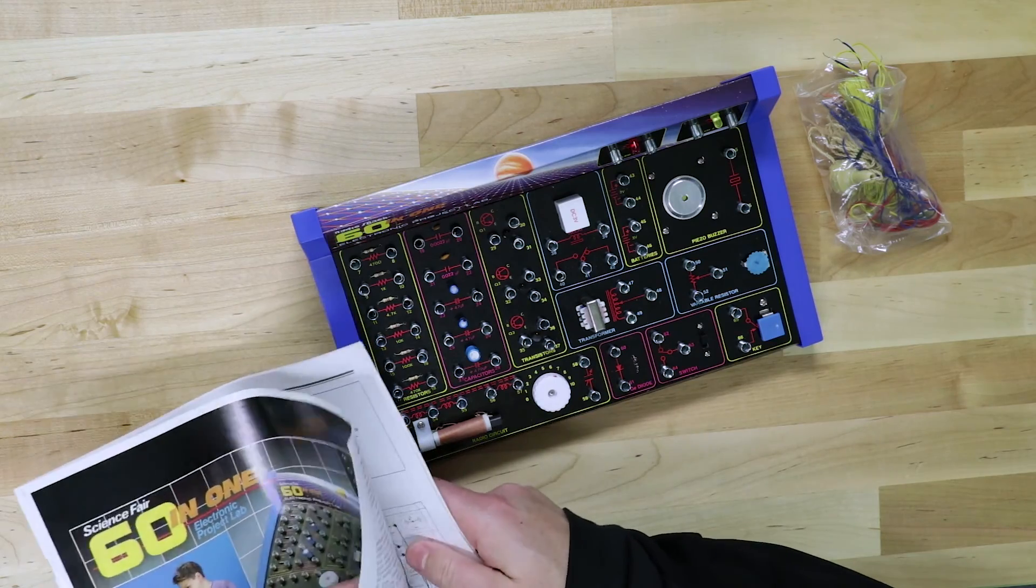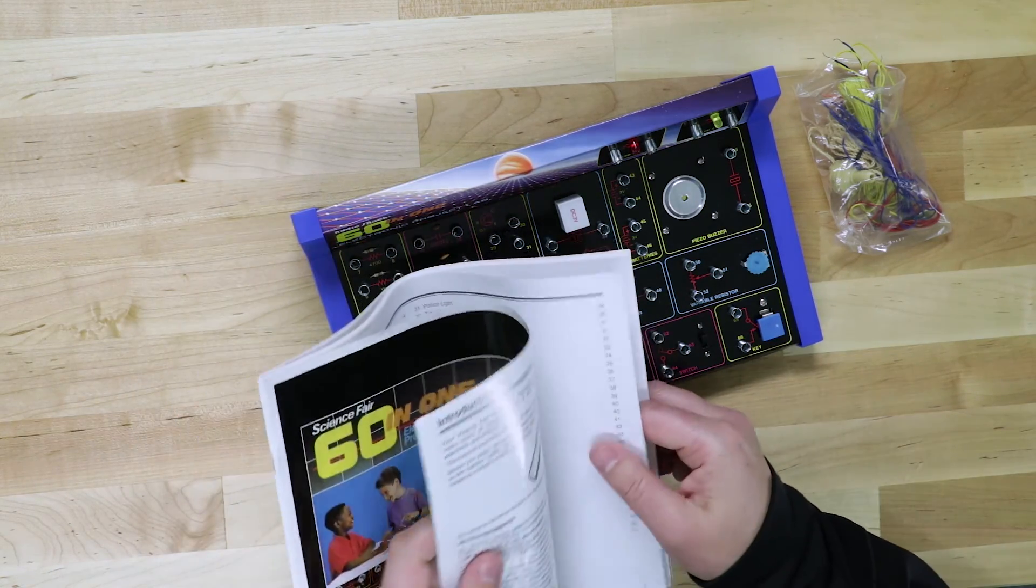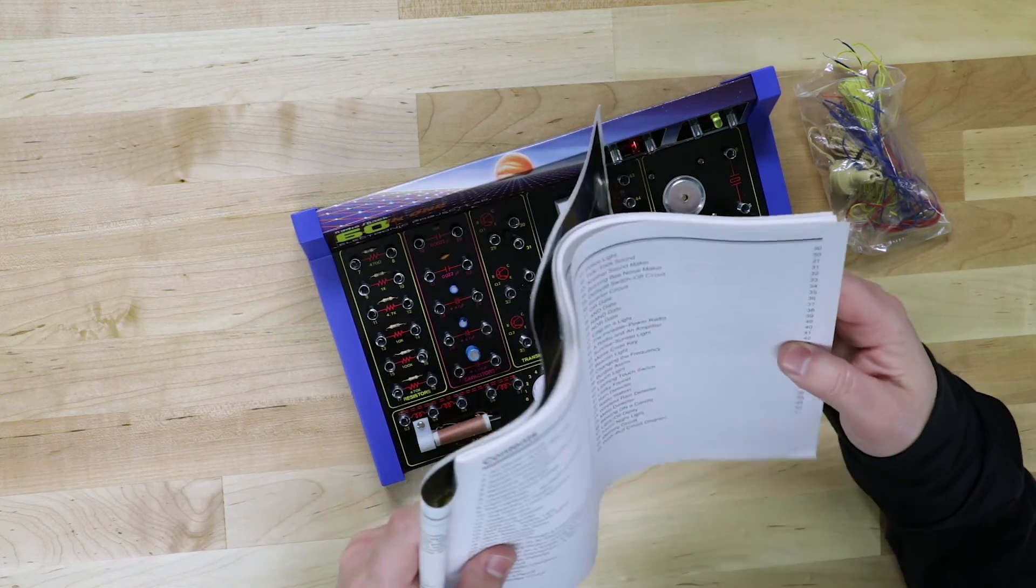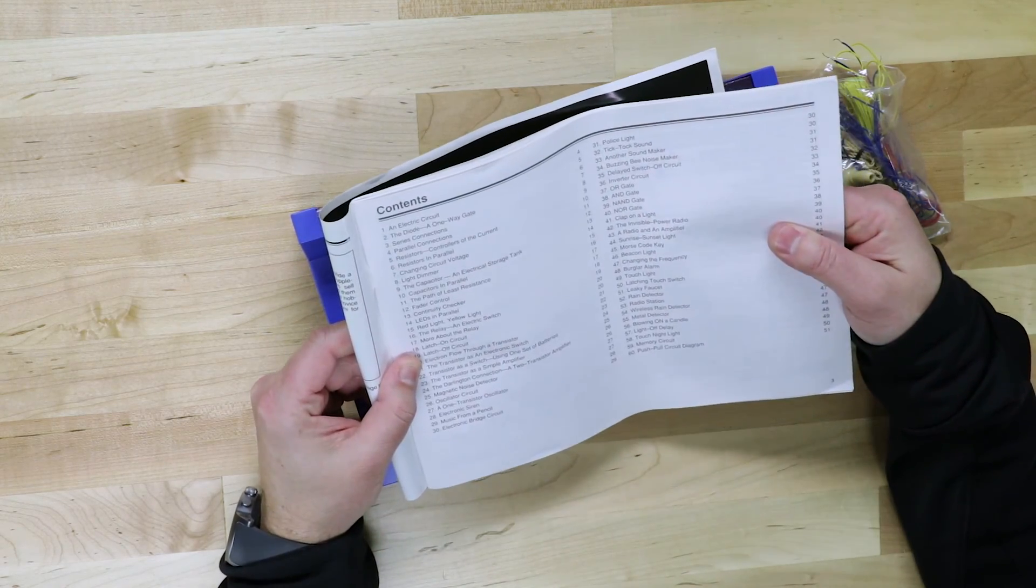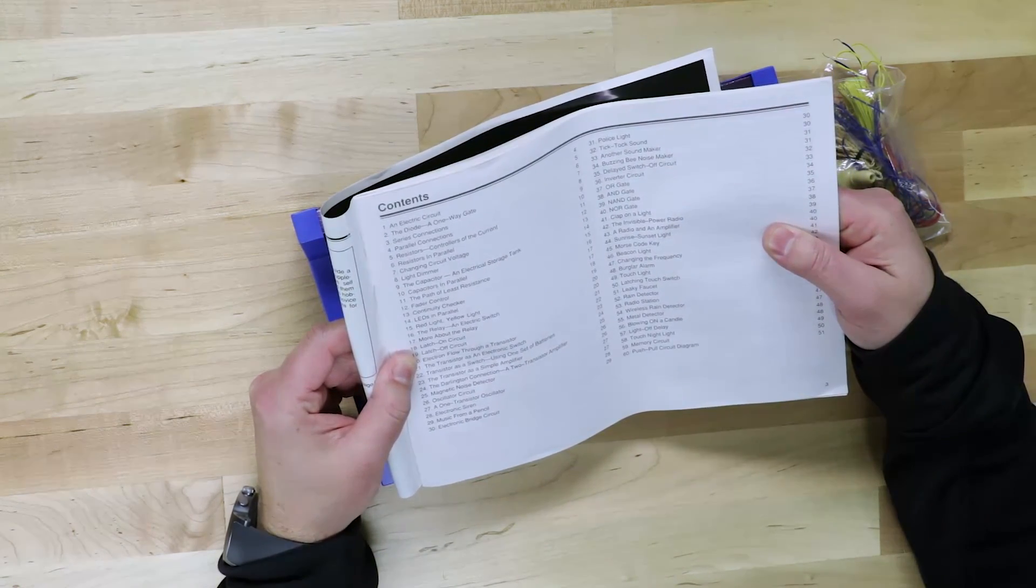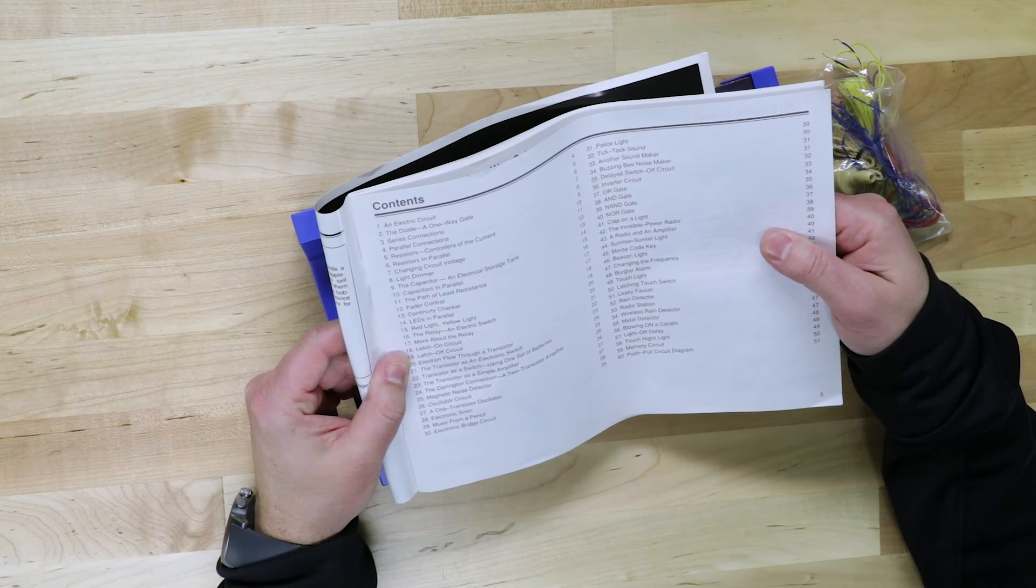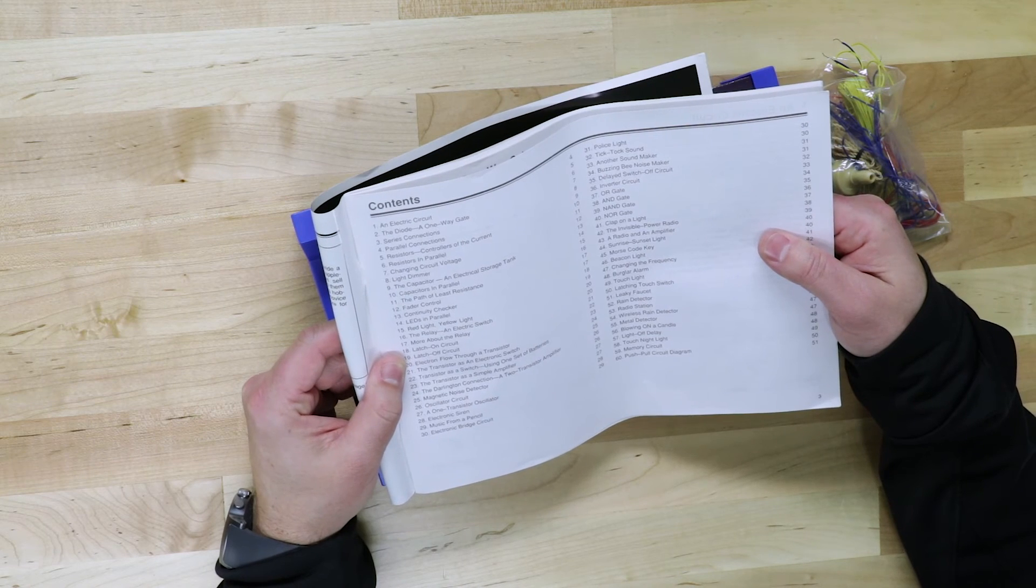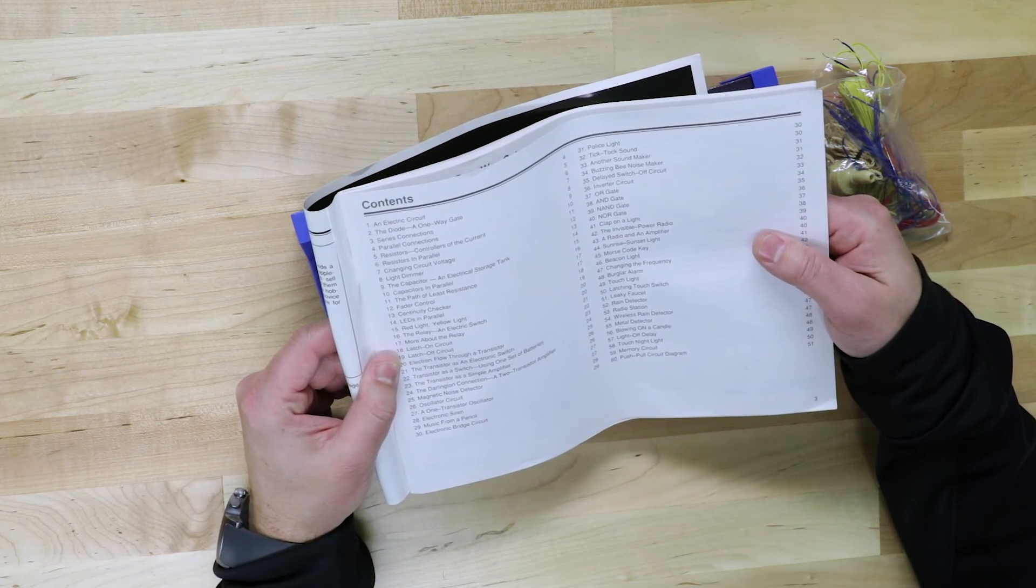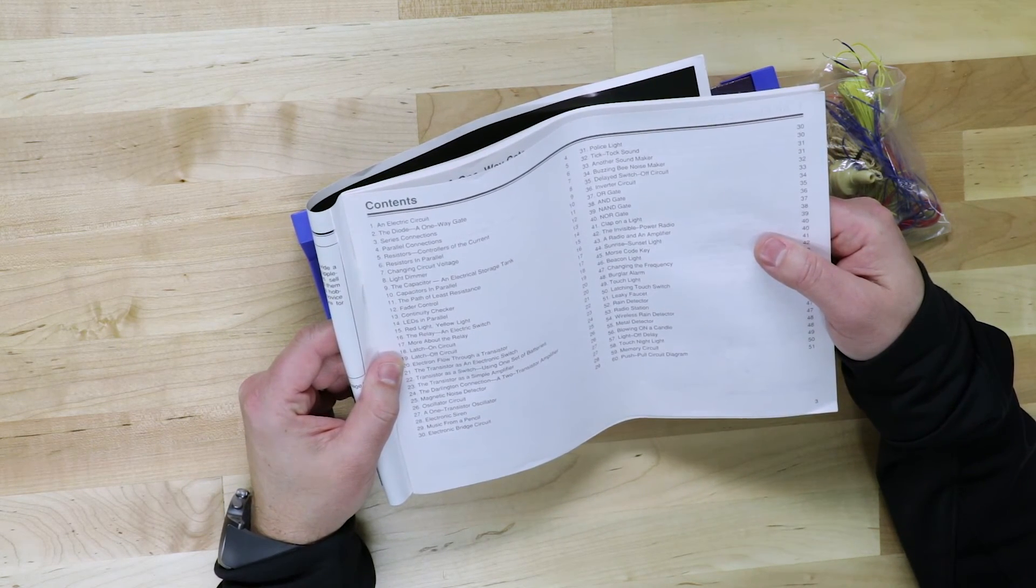Let's just, to kind of give you an idea, I'll run down some of the projects that you can create. Some of these would be like a fader control, a latch on and off circuit, an oscillator circuit, a magnetic noise detector, an electronic siren, music from a pencil,